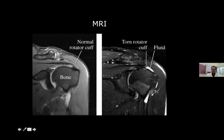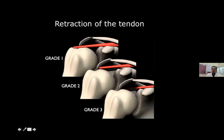On MRI, you will note fluid collection in the torn edge from the greater tuberosity to the torn edge of the tendon. The picture on the left shows normal continuity of muscle fibers all the way to the greater tuberosity, whereas on the right, continuity is disrupted with fluid signal changes confirming rotator cuff tear. We also need to assess the degree of tendon retraction — up to 1 cm, 1 to 2 cm, or more than 2 cm up to the glenoid ridge — which determines whether you can bring the tendon back without tension.